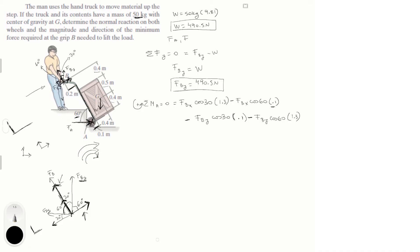Now we have the moments caused by the weight, which has a projection going this way and a projection going that way. This is 60 degrees and this is 30 degrees. So: the weight times cosine 60 times the distance 0.4, and it's positive because it's trying to turn the unit counterclockwise. And last but not least, the weight times cosine 30 times the distance from here to here, which is 0.4 plus 0.1, equaling 0.5 — and this is negative because it's trying to turn the unit clockwise.